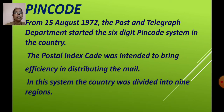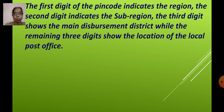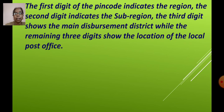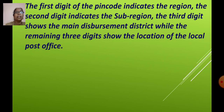In this PIN code system, the country was divided into 9 regions. The PIN code is of 6 digits. The first digit indicates the region, the second digit indicates the sub-region, and the third digit shows the main disbursement district. The remaining 3 digits show the location of the local post office — whichever area the letter has to be posted, those last 3 digits show the location of that post office.